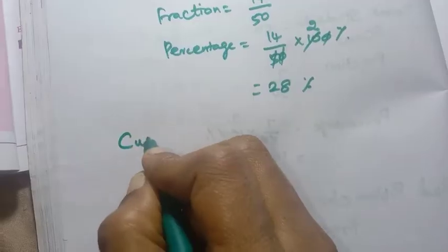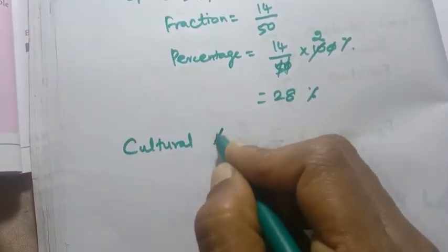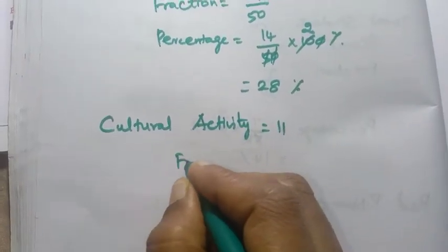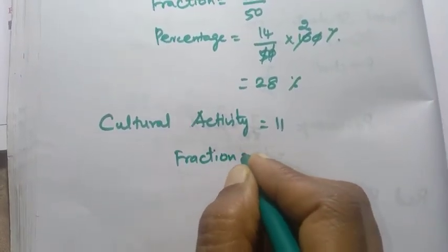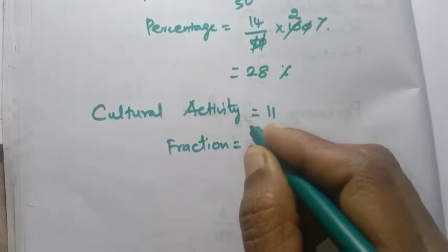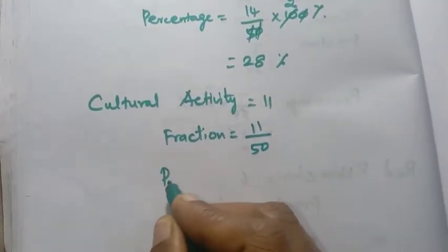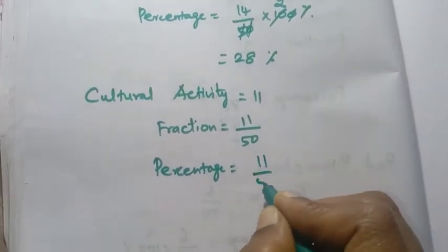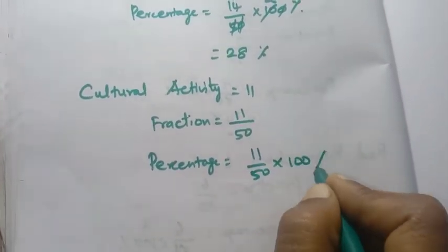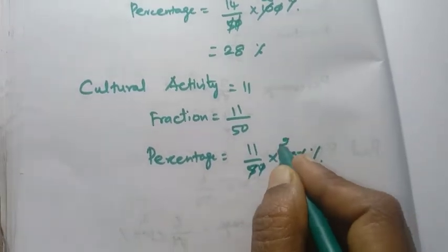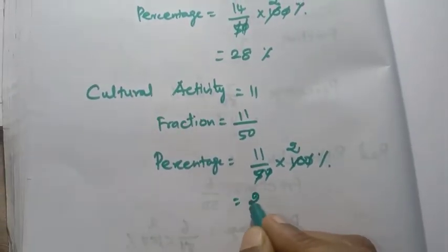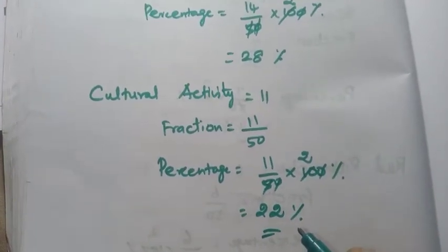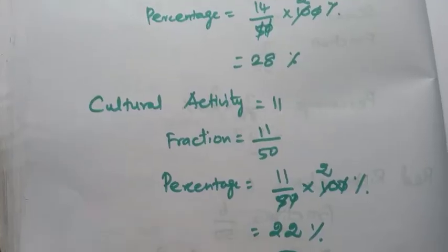Cultural Activity: 11 students involved. Fraction = 11 by 50. Percentage = 11 by 50 into 100. Cancel zeros: 5 twos are 10, 11 twos are 22 — so 22 percentage.